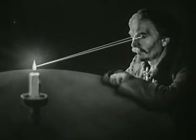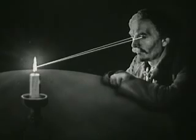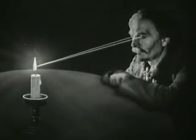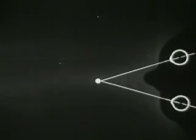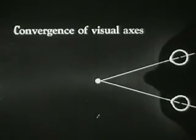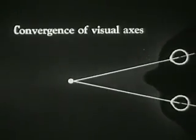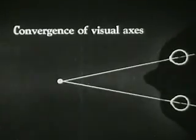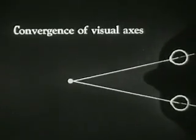It is also necessary that both our eyes be fixed upon the same point in order that we may see an object clearly. Thus, as an object approaches us from a distance, our eyeballs turn accordingly. This movement is called the convergence of visual axes. This action is shown here as the object approaches and recedes.